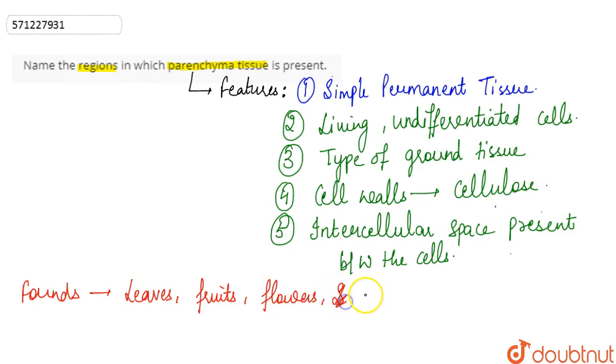Other than that, in the endosperm of the seed, we can see the parenchyma tissue. So we can say that the regions in which parenchyma tissue is present are leaves, fruits, flowers, and endosperm of the seed.